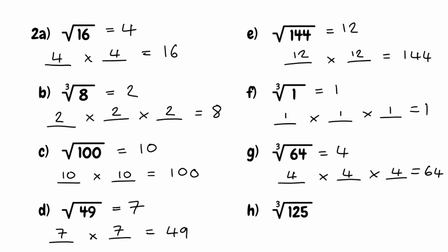For our final question, we're looking for the cube root of 125. What number when multiplied by itself three times gives us 125? That would be 5, because 5 times 5 is 25, and multiplying that by 5 again gives us 125. So the cube root of 125 is 5.